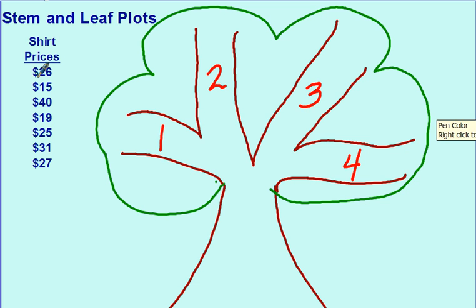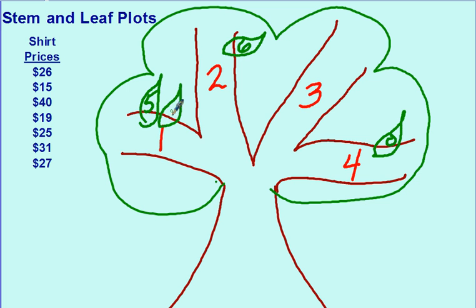Now let's look at the leaves for each one. $26 will go on the second stem and its leaf will be six. If you put the stem and leaf together you get 26. 15, first stem with a leaf of five. 40, fourth stem with a leaf of zero. Do you see how if I put those together I get 40? 19, first stem with a leaf of nine. 25, second stem with a leaf of five. 31, third stem with a leaf of one. And 27, second stem with a leaf of seven.